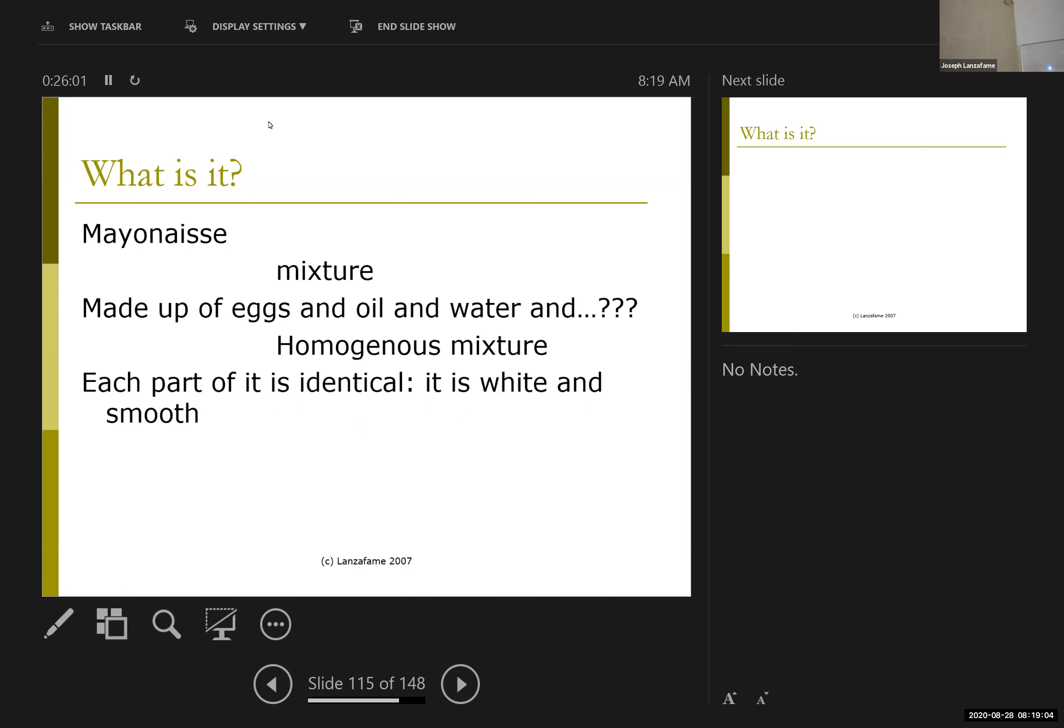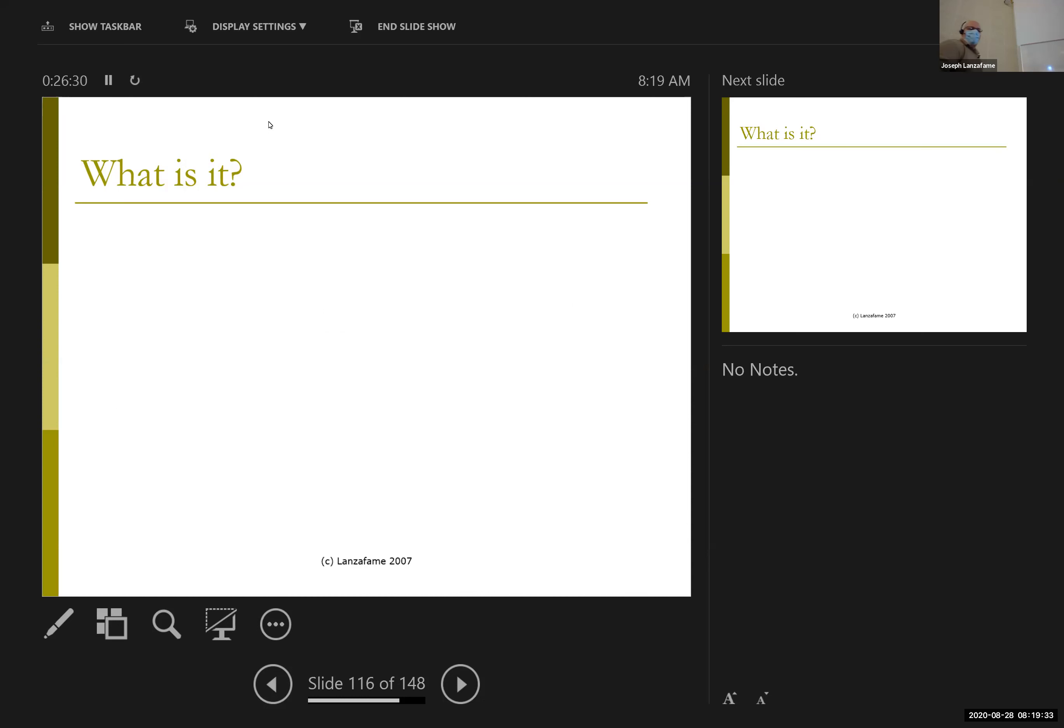So mayonnaise, again, it's a mixture. It's got oil in it, and then it's got egg in it, and egg itself is a mixture. There's the yolk-y parts and the white parts, but mayonnaise is creamy white throughout. It looks exactly the same throughout. It should be just as greasy at the top as it is at the bottom, and so it's a homogeneous mixture.